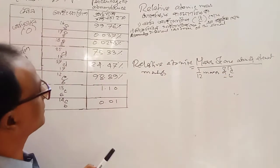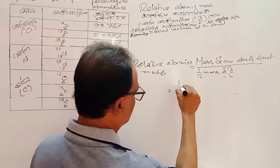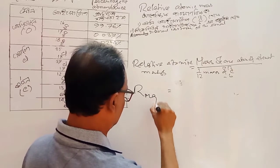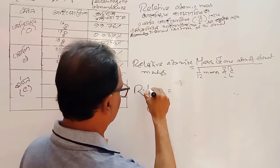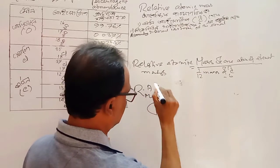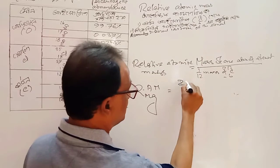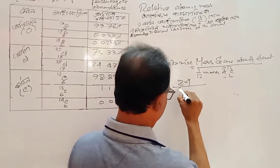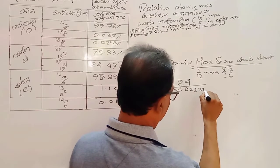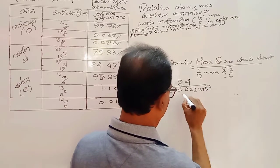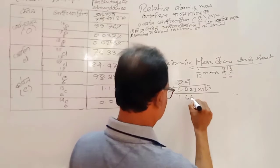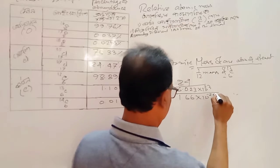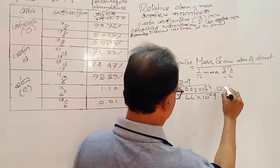Suppose we would like to calculate for magnesium. The relative atomic mass of magnesium is 24. We divide 24 by 6.023 × 10²³, or equivalently by 1.66 × 10⁻²⁴. We will have a result nearly equal to 24.